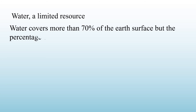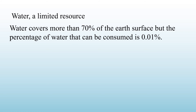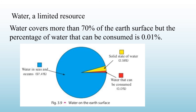Water is a limited resource. It is a very important natural resource given to us by nature. Although water covers more than 70 percent of the earth's surface, the percentage of water that we can consume is only 0.01 percent. In this diagram, 97.41 percent of water can be seen in seas and oceans, 2.58 percent is in the solid state, and only 0.01 percent can be consumed by us.